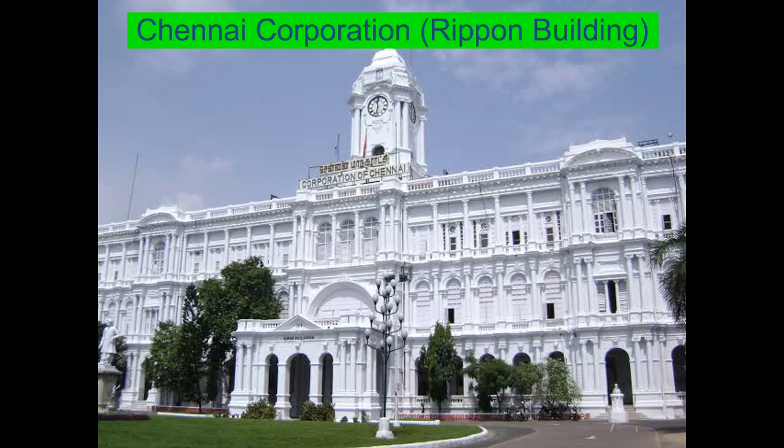Now we will see about urban local government. Under urban local government, there are Town Panchayats, municipalities, and corporations. Town Panchayat: areas where more than 10,000 people live are called Town Panchayats. Members and the president are directly elected by the people, and there is an executive officer appointed by the government to look after administration, with a five-year term.